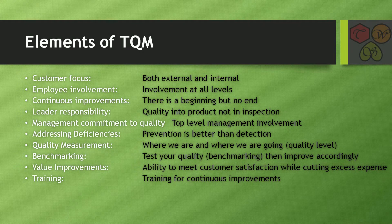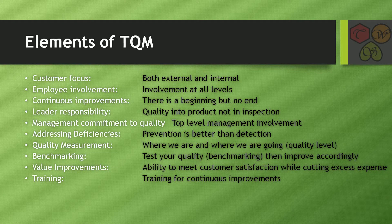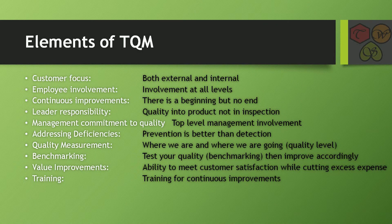The second one is employee involvement. There are different levels of employees working in a company. For example, in a college there are professors, students, TAs, department heads, Deans, Directors, and HR. These are all different levels of employees working in a company. In order to implement TQM, all employees should be involved in the company's improvement.